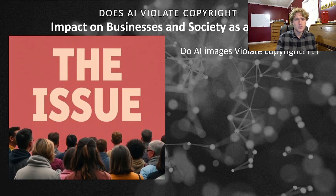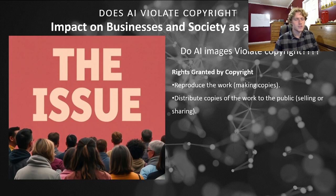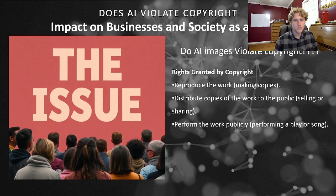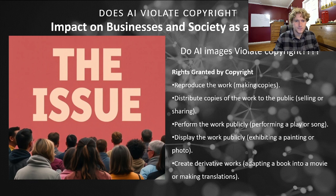The issue: do all AI images violate copyright? What are the rights granted by copyright? It is the ability to reproduce a work — making copies of something you have created — distributing these copies to the public, performing the work publicly, displaying the work publicly, like exhibiting it. This can range from many different things, like someone creating videos or images. You also cannot create adaptations of that work if you do not have the copyright.